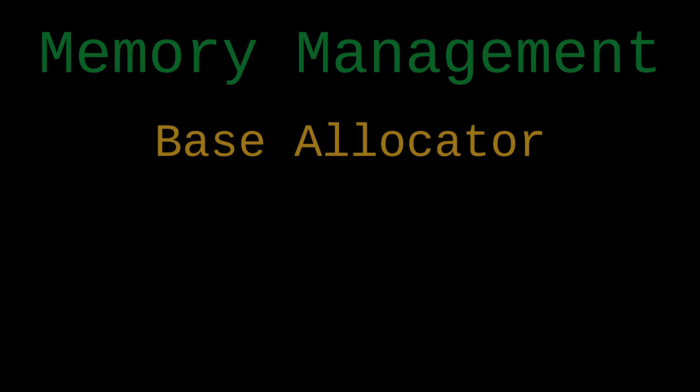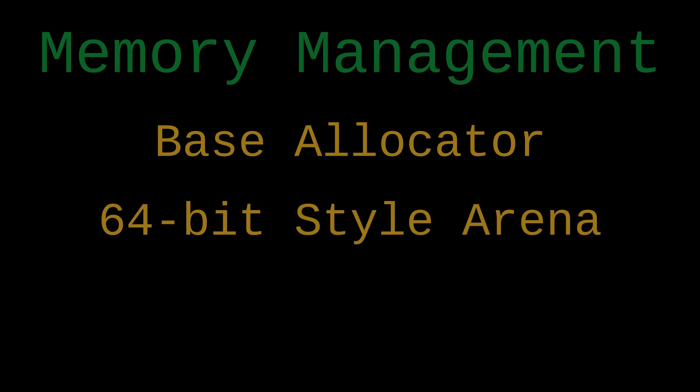Second, we're going to build a 64-bit style arena. We might have occasion someday to do a 32-bit style arena as well. The difference is that in 64-bit address spaces it's a lot more reasonable to assume you can grab a reservation of the amount of space you're actually going to need, but only commit parts of it at a time, because you have many gigabytes worth of space you can reserve. You obviously don't want to commit all of it.